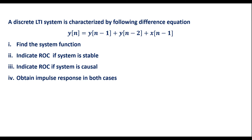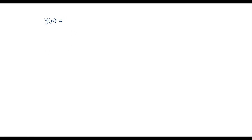First, let me take the difference equation. We will try to find the system transfer function. Let me rewrite the given difference equation: y(n) = y(n-1) + y(n-2) + x(n-1). This is the given difference equation. Now, apply the Z-transform to this equation.